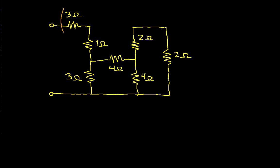If you look carefully, the 3 ohm and the 1 ohm resistor are in series. You can tell they're in series because any current that goes through the 3 ohm resistor must go through the 1 ohm resistor. There's no other place for that current to go. So these two resistors are in series.